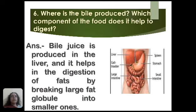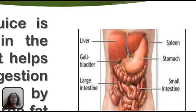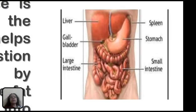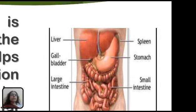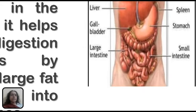The next question is: where is bile produced, and which component of food does it help to digest? Bile juice is produced in the liver and it helps in the digestion of fats by breaking large fat globules into smaller ones. You can see the picture of the liver here — bile is produced from the liver and then temporarily stored in the gallbladder.